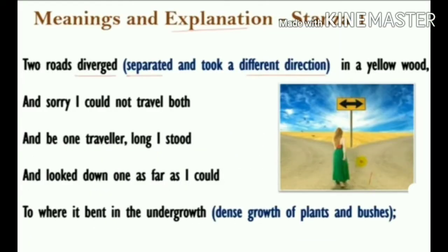Here, yellow wood refers to a part of the forest where yellow leaves are found. Why yellow leaves? Because it is autumn season — in autumn, trees shed their yellow leaves, and then green leaves appear on the branches. So it appears yellow because of the yellow leaves fallen from the trees onto the road.